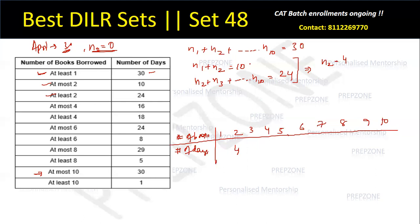n2 = 4, and since n1 + n2 = 10, n1 = 6. Similarly, using 'at most 4' and 'at least 4': n1+n2+n3+n4 sums to some value, and n4+...+n10 sums to another. Adding them gives 34, and subtracting 30 gives n4 = 4. Since n1+n2+n3+n4 must equal 16, and n1+n2 = 10 and n4 = 4, we get n3 = 2. I now directly fill values without solving full expressions each time.